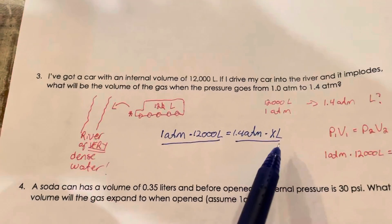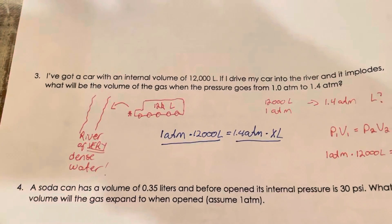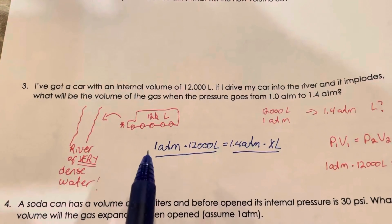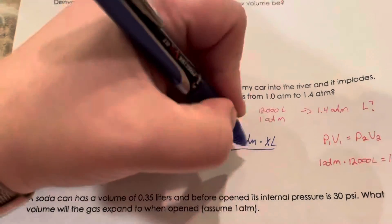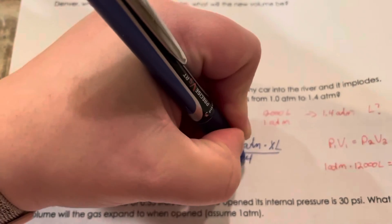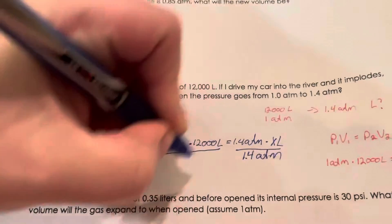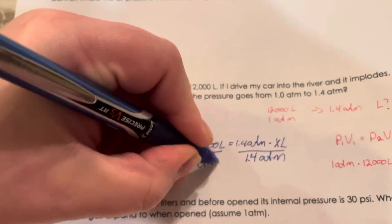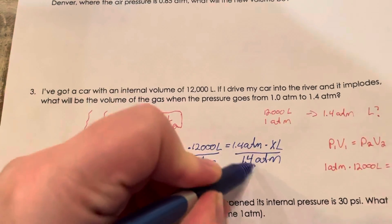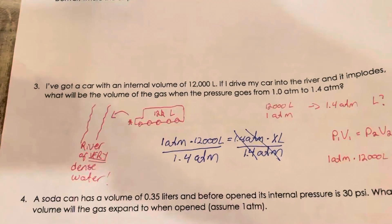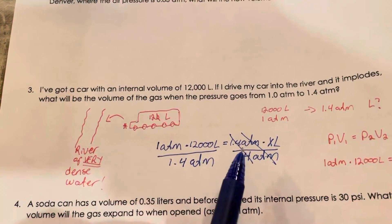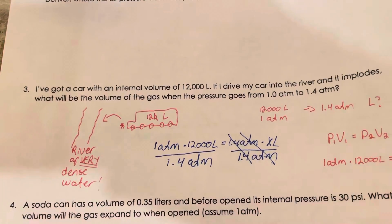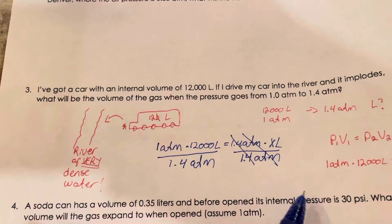So algebra, I just need to get my X alone on one side. I can multiply and I can divide, that is the way to solve algebra. So if I need to get rid of something on one side to isolate my X, I need to remember to do the same thing on both sides. So if I divide by 1.4 atmospheres from both sides, I can take out if I have something that's the same over and under the division line, I can just scratch it out.